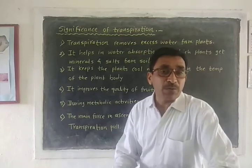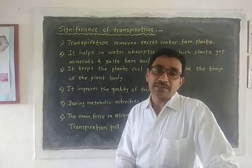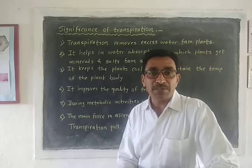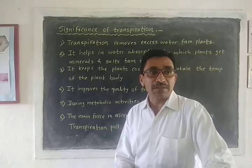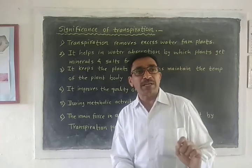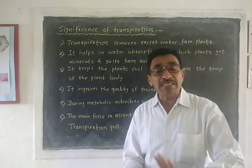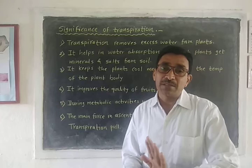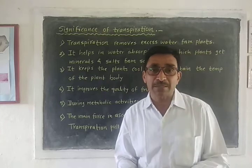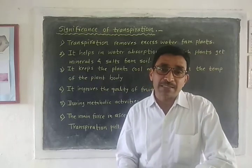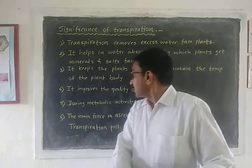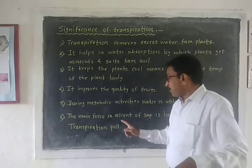The fifth significance is that water is utilized for metabolic activities. For all metabolic activities — photosynthesis, respiration, ascent of sap, diffusion, osmosis, and imbibition — water is essential. Plants obtain this water because of transpiration: whatever transpiration takes place, water absorption also takes place, and that water is utilized for metabolic activities.